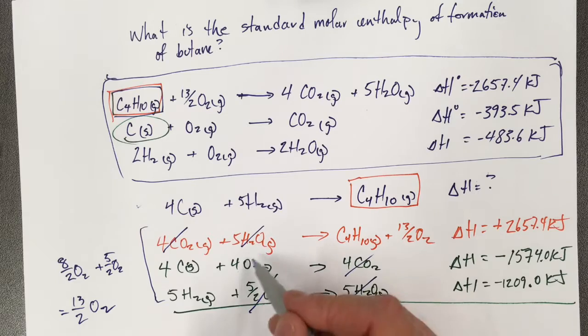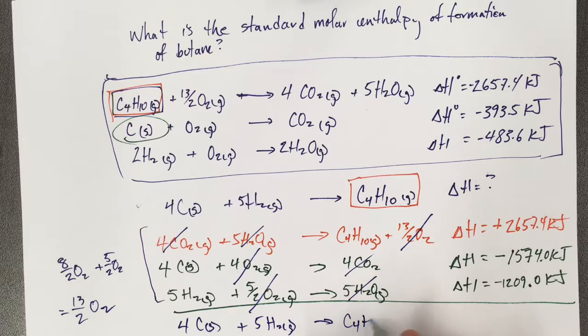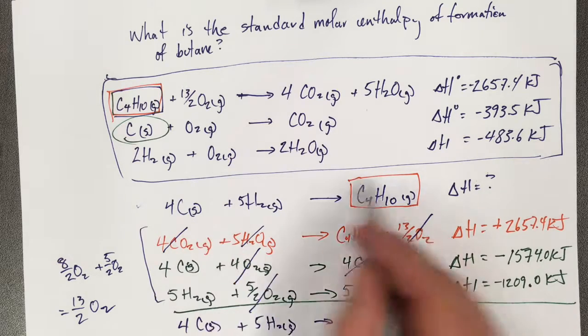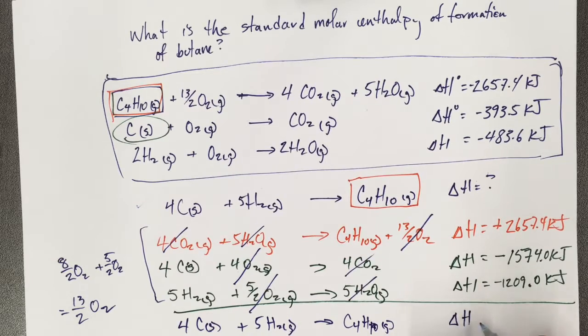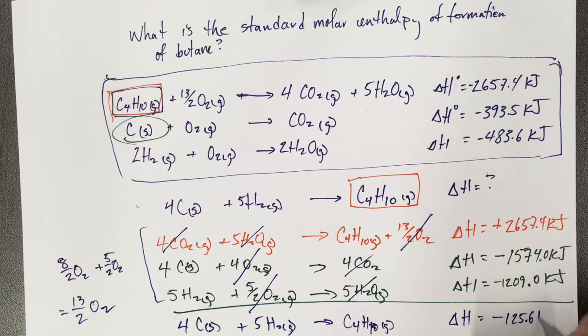So this and this cancel out 13 half oxygens. And it leaves me with 4 carbon solid plus 5 hydrogen gas makes my butane, which is the reaction that I wanted to derive here. And the enthalpy of this is going to be the sum of these energies, which ends up being negative 125.6 kilojoules.